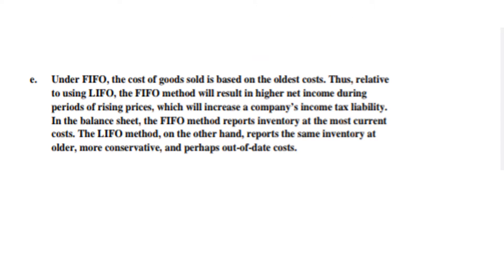Part E asks what are the financial reporting differences when using FIFO versus LIFO. When using FIFO, we assign the oldest cost to cost of goods sold and a higher cost remains in inventory. Under FIFO, cost of goods sold is based on oldest cost, which is lower relative to LIFO, and the FIFO method results in a higher net income because the lower cost of goods sold means more profit remains.